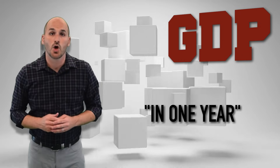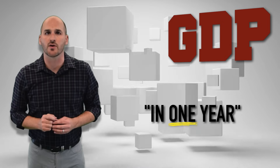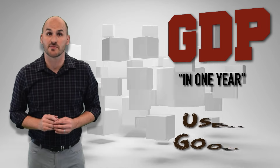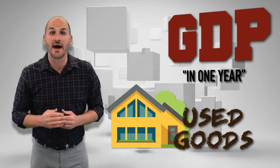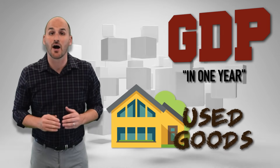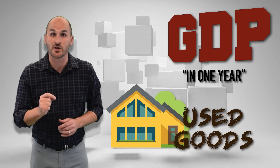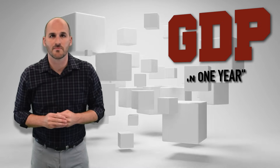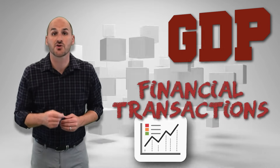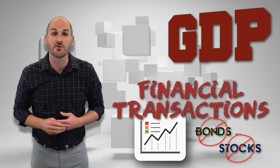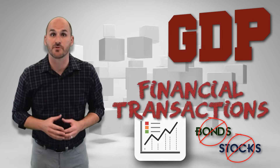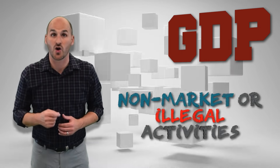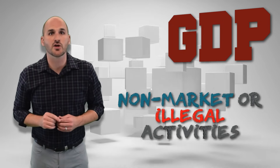In one year: gross domestic product only includes goods and services produced in the current year, meaning it doesn't include used goods. Used goods were already included in the year in which they were produced. If you buy a house constructed in 1955, it doesn't count in this year's GDP because it was already included in the 1955 GDP. GDP also doesn't include financial transactions like investments in bonds and stocks because nothing is being produced. GDP also doesn't include non-market or illegal activities — if it's under the table or not in the books, it's not included in the GDP.